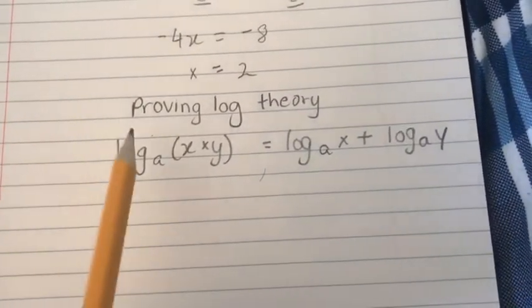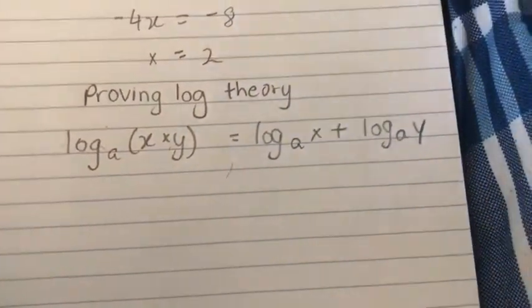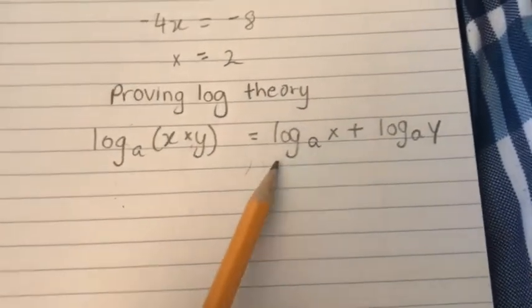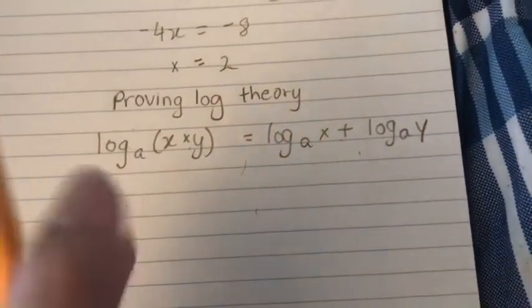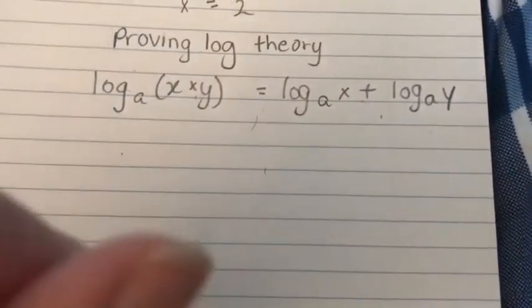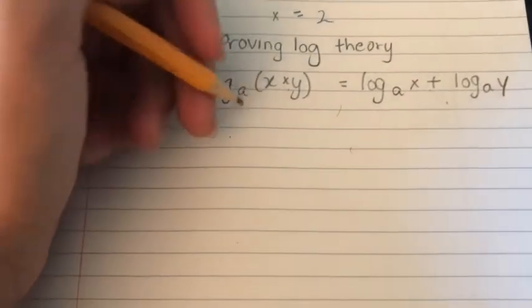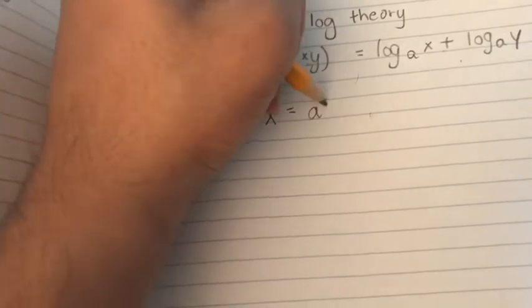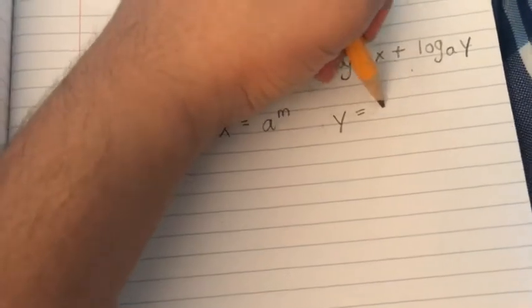Let's look into a theory and how we can prove it. This is the rule that states log base a of (x times y) equals log base a of x plus log base a of y. This is easy to prove if you notice every element. First, let's write each of these in exponent form: x equals a to the power m, and y equals a to the power n.